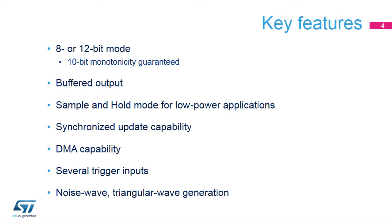10-bit monotonicity is guaranteed. The DAC output can have a low-impedance buffer to drive external loads. Its sample and hold mode can reduce power consumption significantly. Two DACs can be synchronized with each other. The input data can be transferred by DMA, which offloads the CPU. The DAC output data can be updated by a timer, an external trigger, or a software trigger. It also integrates small logic to generate noise waves as well as triangle waves.